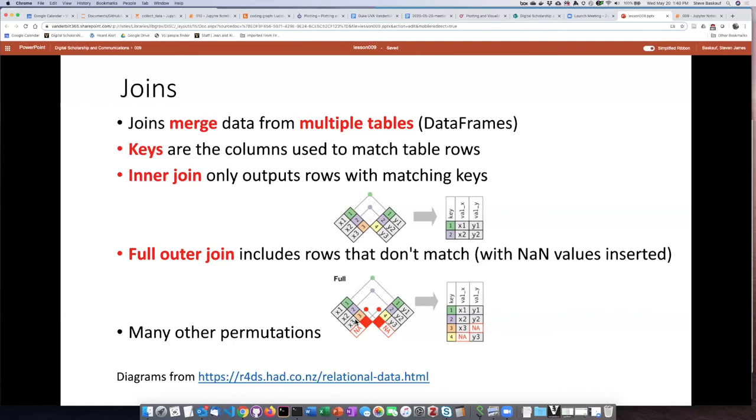So for example, the left table here has a value for the key of three, but there isn't any in the right table. So we put in the value from the left table, but for the right value of the right table, we put in a missing value. And the same thing applies then on the right table.